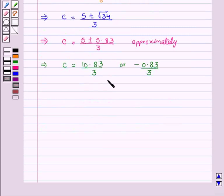Now this implies c = 10.83/3 or -0.83/3. There is no value of c belonging to the open interval (1,3).